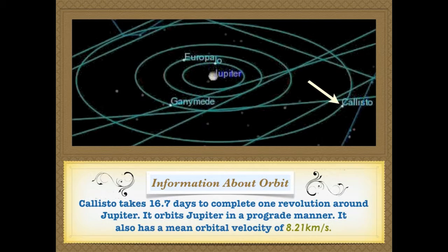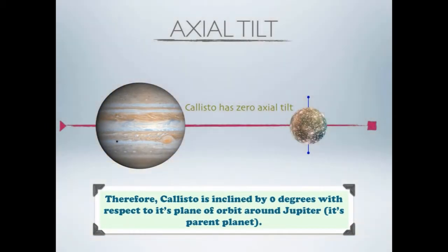It orbits Jupiter and rotates in a prograde manner, and has an average orbital velocity of 8.21 km per second. This diagram shows the inclination of Callisto's axis with respect to its plane of orbit around Jupiter. Callisto has zero axial tilt, therefore it is inclined by zero degrees with respect to its plane of orbit around Jupiter.